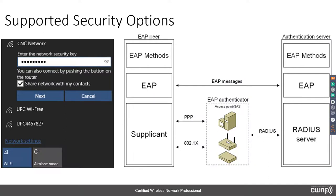An important consideration for all devices is understanding supported security options. Some devices do not support 802.1X/EAP at all — only pre-shared key. With those devices, you must have an SSID that supports pre-shared key. It's important to understand this when purchasing devices: if you have the option, choose a device that supports enterprise security. Even if using WPA2 Personal today, having the feature capability means you could move to WPA2 Enterprise later if needed.